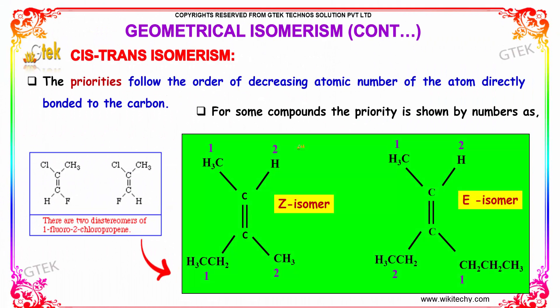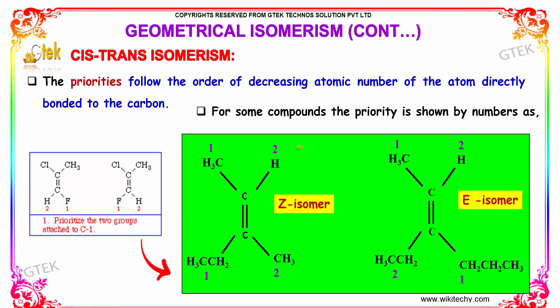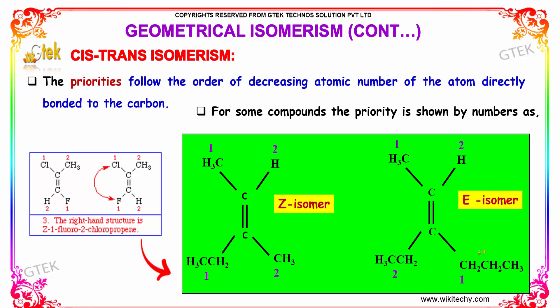The priorities follow the order of decreasing atomic number of the atom directly bonded to the carbon. For some compounds, the priority is shown by numbers. The higher the molecular mass, the higher is the priority. Similarly, for the E isomer, the compound with the higher molecular mass has the higher priority.